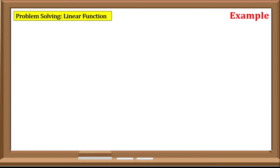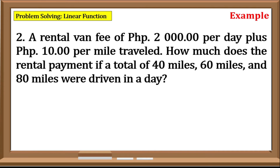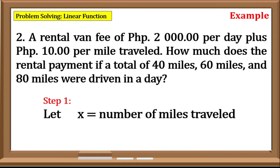Example number 2: A rental van fee of 2000 pesos per day plus 10 pesos per mile traveled. How much does the rental payment if a total of 40 miles, 60 miles, and 80 miles were driven in a day? Step 1: Identify the dependent and independent variables. Our unknowns are the number of miles traveled for the dependent variable and the cost of rental for our independent variable.